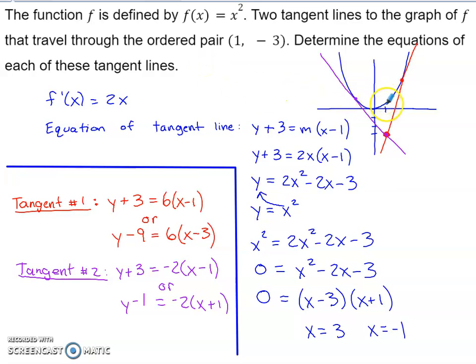The first thing that I did is I kind of just built a graph here. y equals x squared is going to be the blue graph that you see here. The ordered pair 1, negative 3 is obviously down in the fourth quadrant.